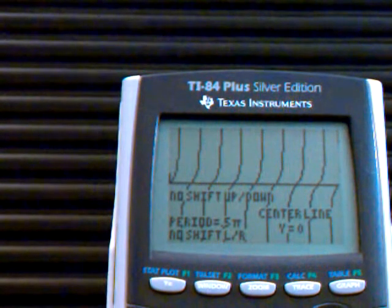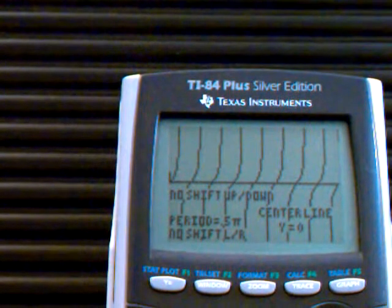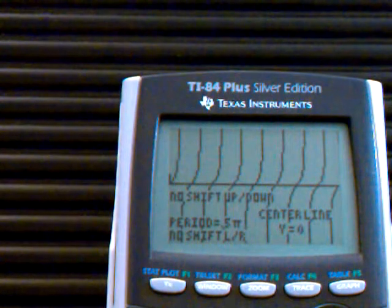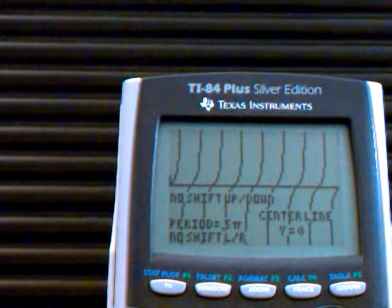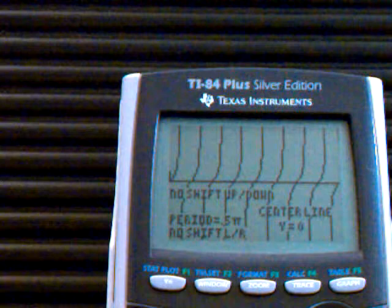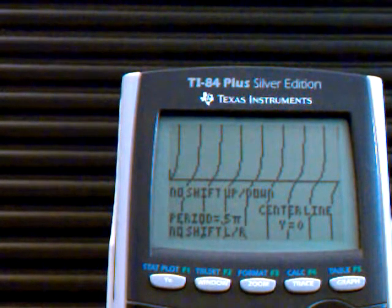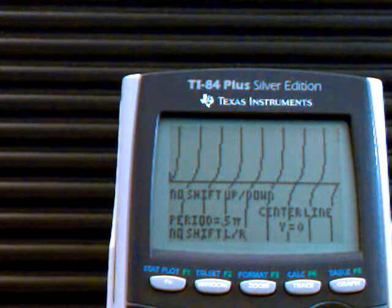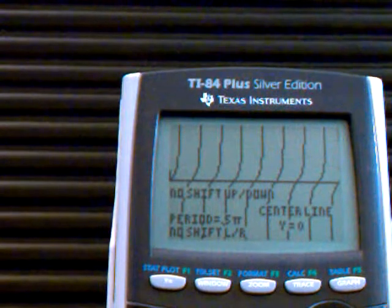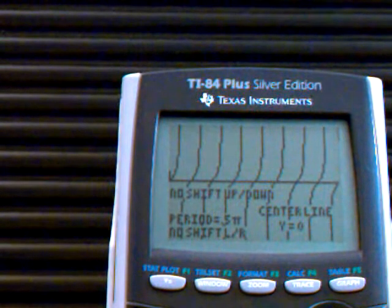Basically, there's no shift up or down. The center line is y equals zero. The period is 0.5, so one complete graph consists of 0.5 units. There's no shift left or right.